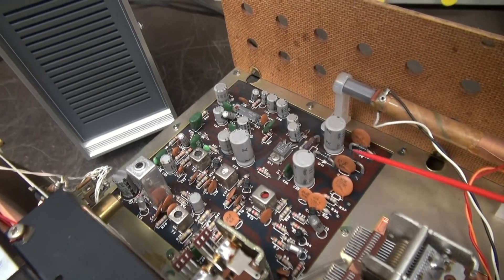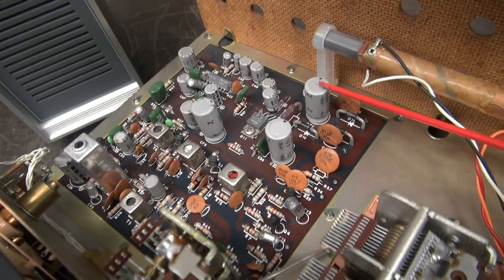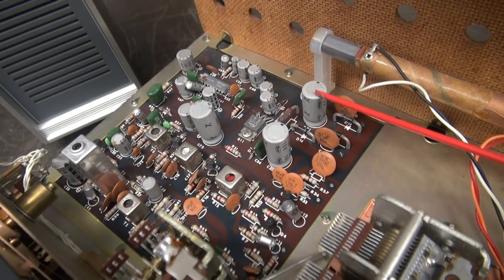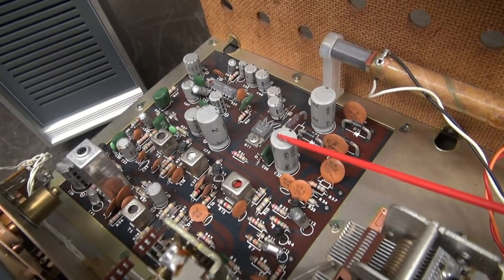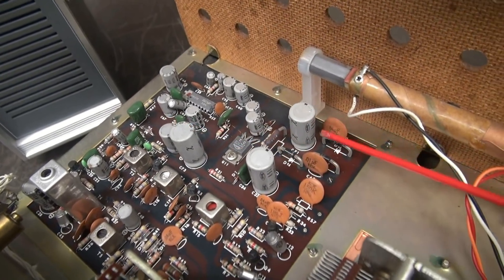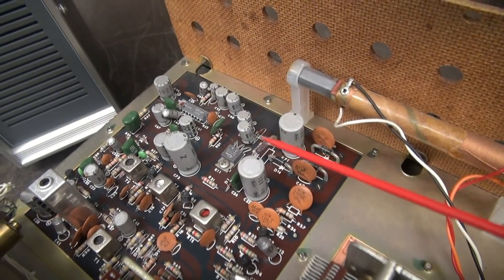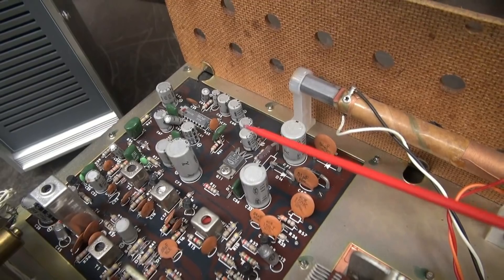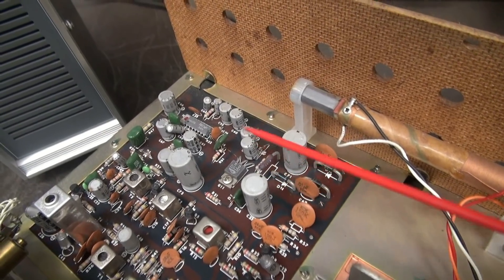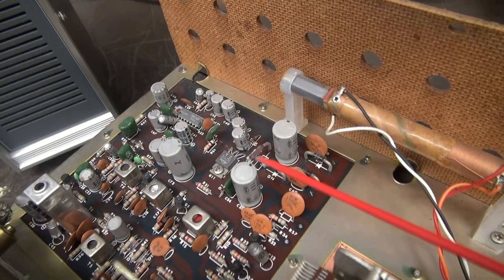So first off, here's the power supply filter caps. These are the old original 470 microfarad caps that came in this radio the day it was built. So obviously the first thing we need to do is change them out. Maybe that will take care of the hum. I don't know. But what I'd like to do first is we're going to throw a scope on the power supply and take a look at the hum level. Then we'll change the caps and see if we change it.